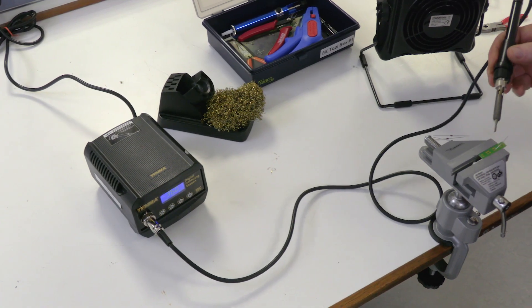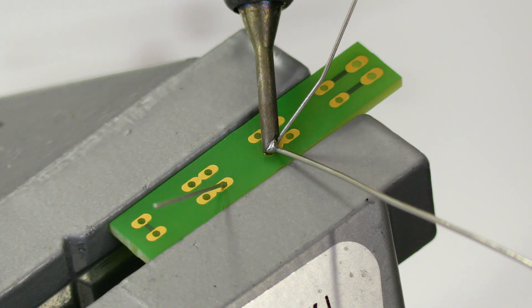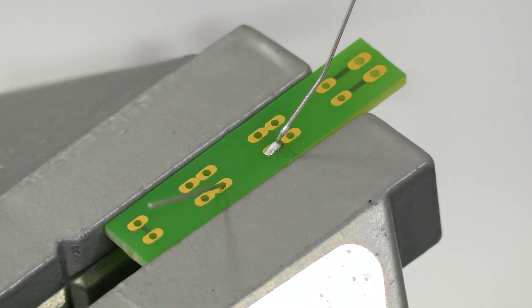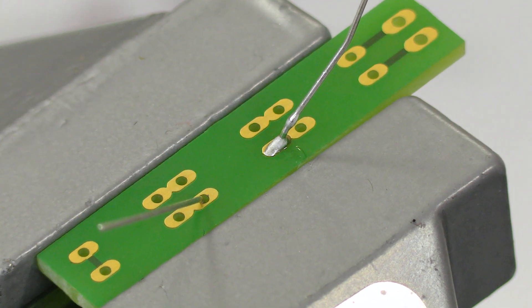Then hold the iron directly to the pad and diode lead and count to three. Next hold your solder to the pad until it starts to melt then take it away. The solder should flow through the hole making good contact between the diode leg and the pad on the board.